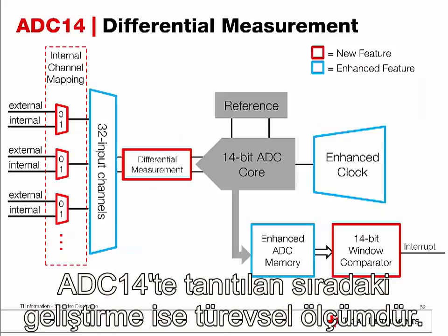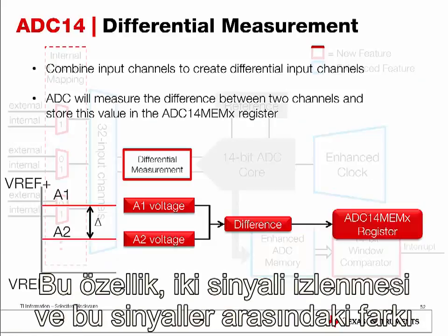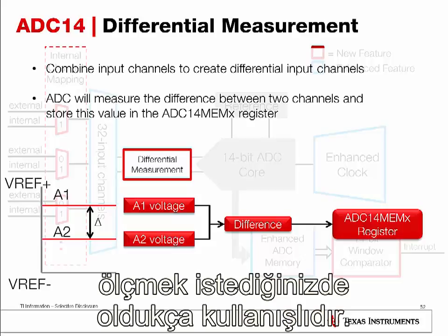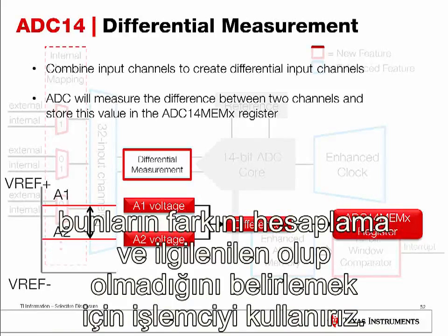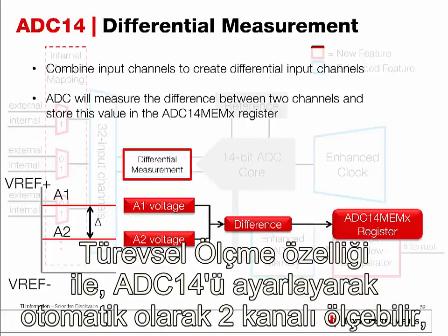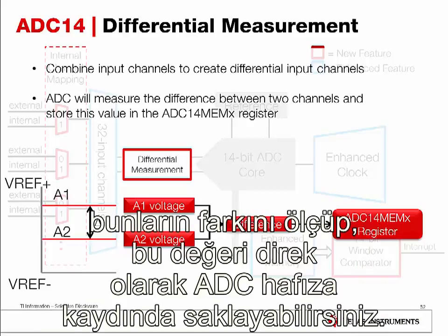The next enhancement introduced to the ADC14 is differential measurement. This feature is useful when you want to monitor two signals and measure the difference between them. Traditionally, CPU intervention was required to invoke the ADC for two measurements and compute the difference in software. With the differential measurement feature, you can configure the ADC14 to automatically measure two channels, compute the difference, and store that result directly into the ADC memory register.